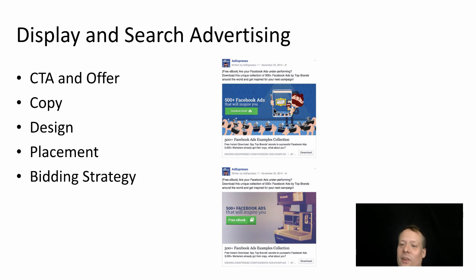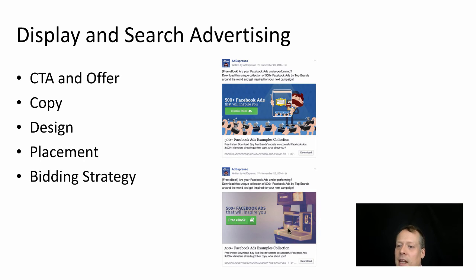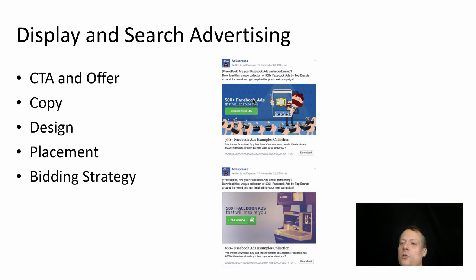You can also optimize your display and search advertising. AdEspresso, which sells Facebook ads, did optimization on their own Facebook ads. The content was exactly the same except for the image — the top ad had a cartoon character showing how to set up basic ads, while the bottom one had a polaroid camera trying to inspire creativity. The top one cost $2.73 per conversion, but the one with just the polaroid image cost only $1.30 per conversion — saving them $1.70 per person signing up.